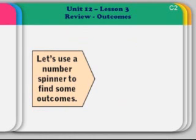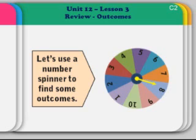Let's review outcomes. Let's use the number spinner to find some outcomes. The number spinner is the numbers 1 through 10 with different colors, but we are going to disregard the colors.